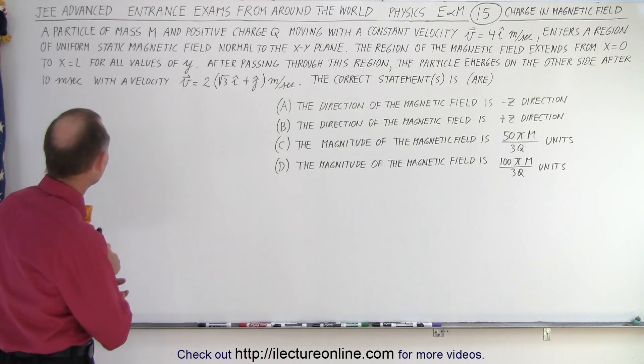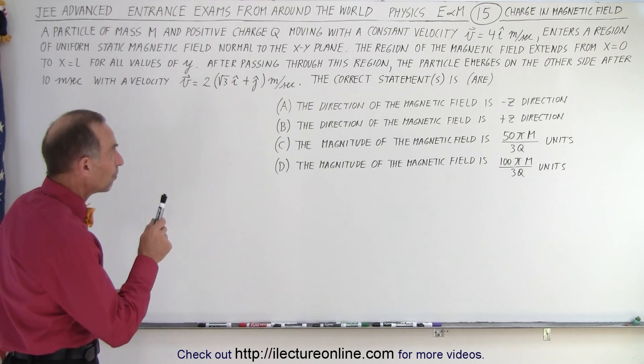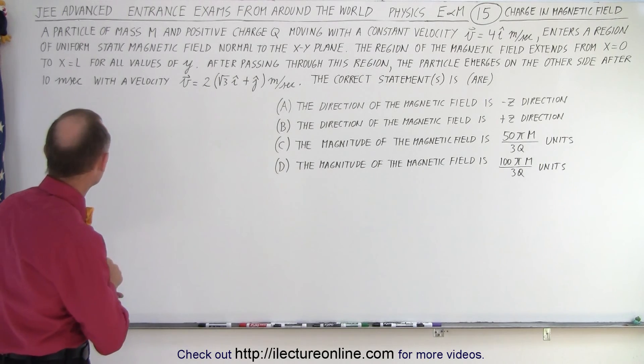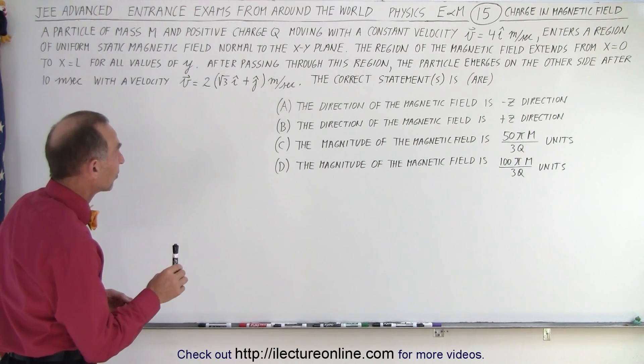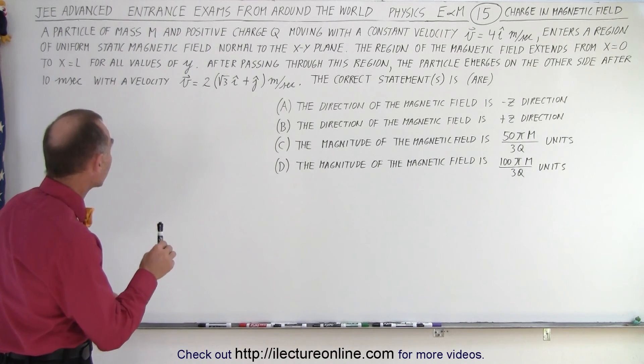A particle of mass m and positive charge q moving with a constant velocity of 4 meters per second in the positive x direction enters a region of uniform static magnetic field normal to the xy plane. The region of the magnetic field extends from x equals 0 to x equals L for all values of y.